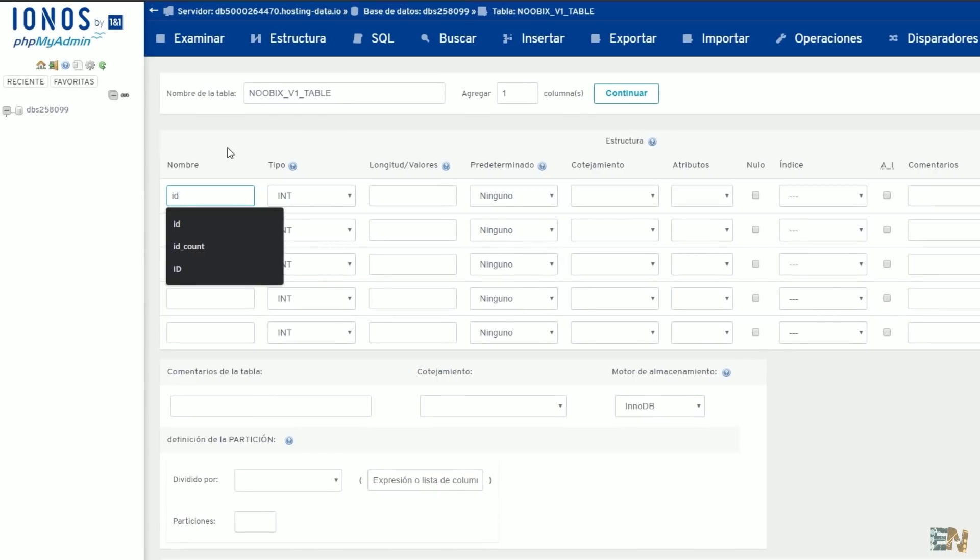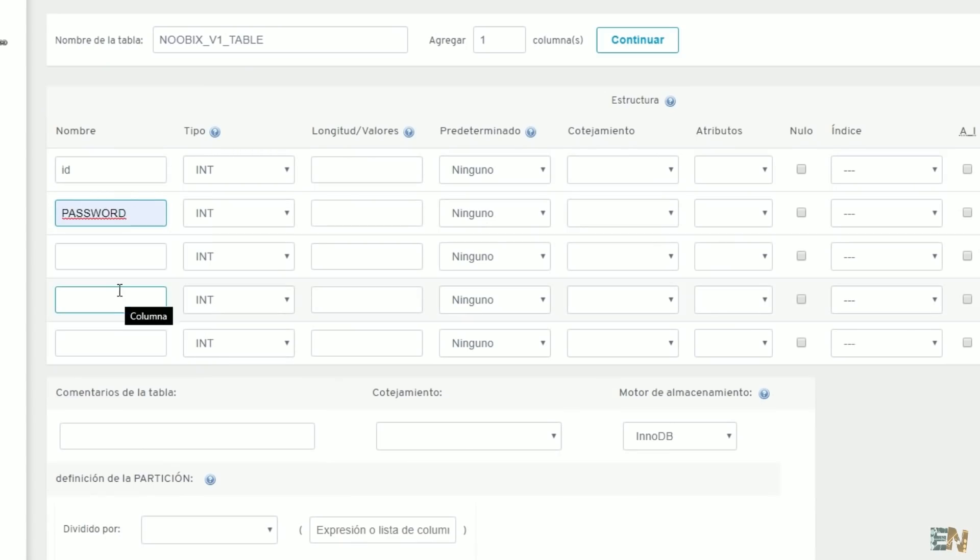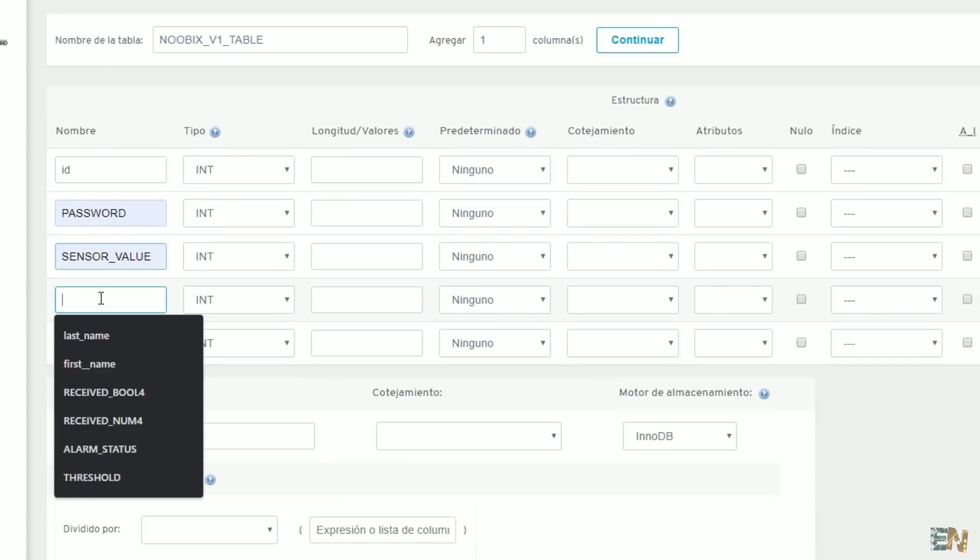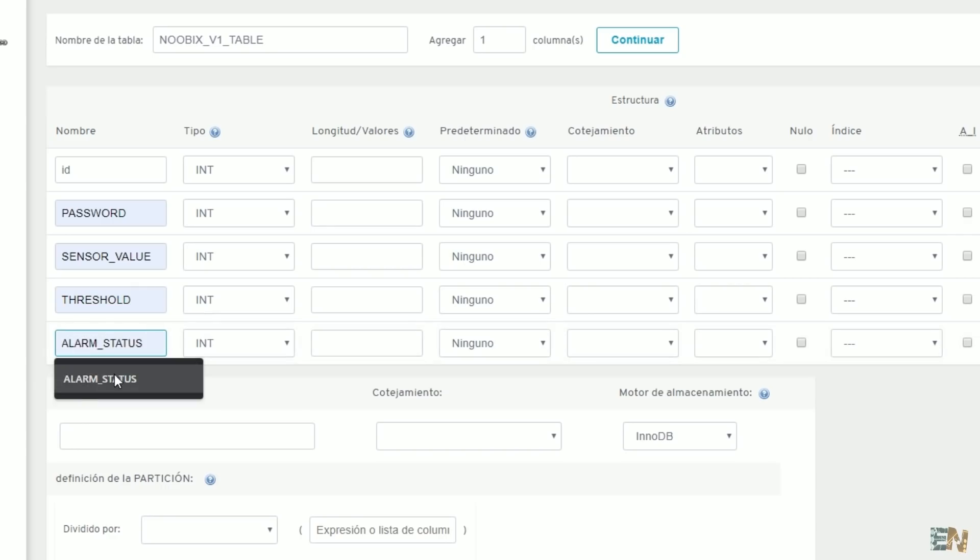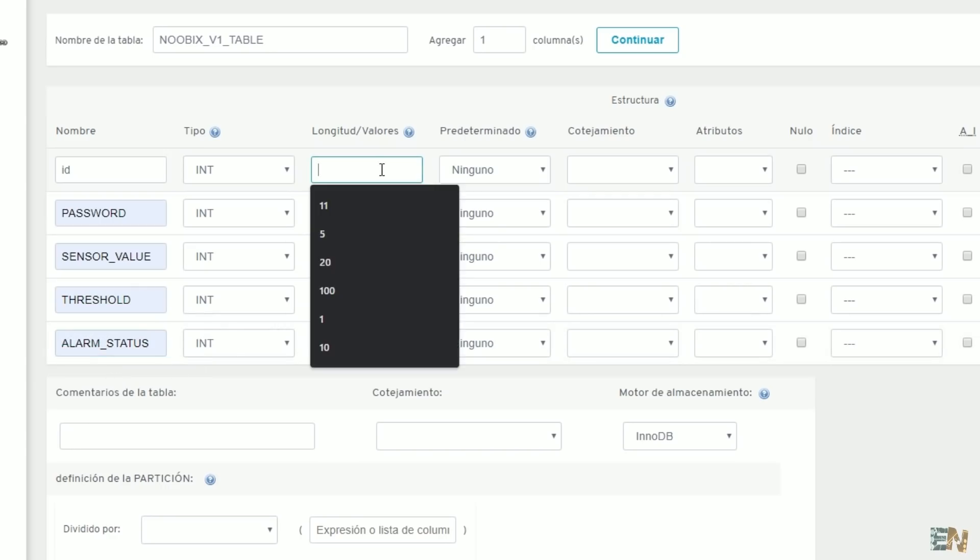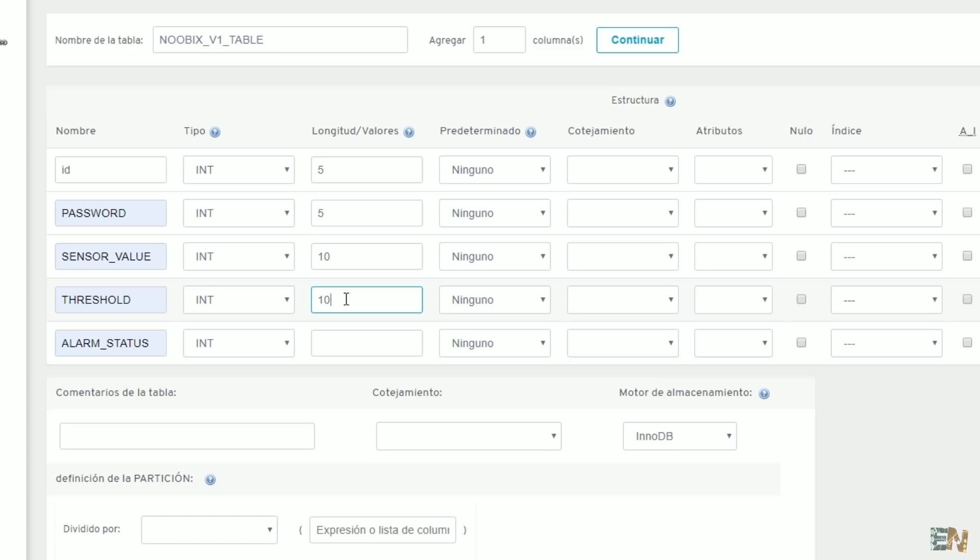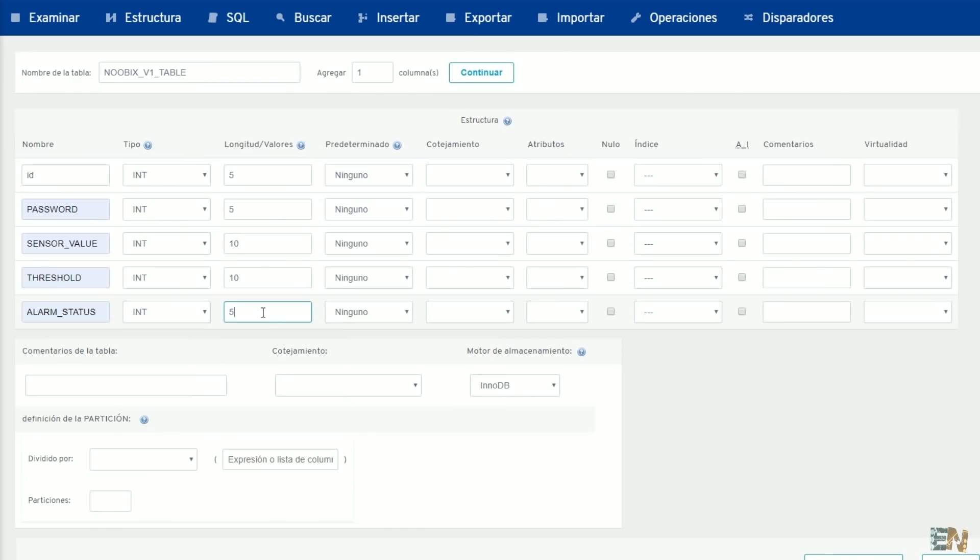First is the ID, then we have the password, the sensor value that we receive, the threshold, and the alarm status. Give the values names and the properties like I did, otherwise it won't work.